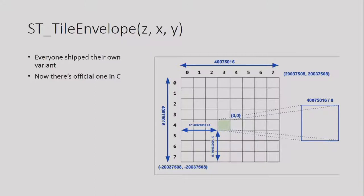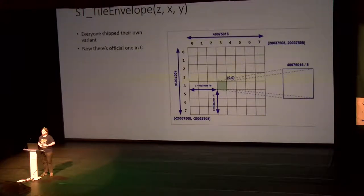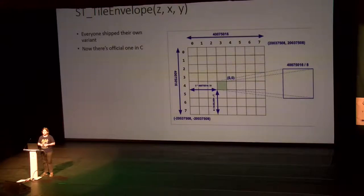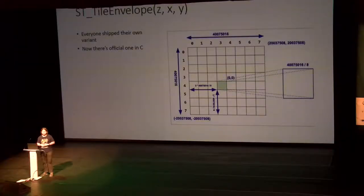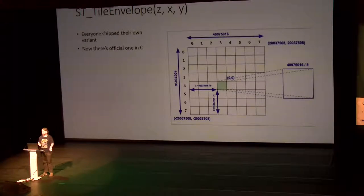Another utility function that was absent is the tile envelope. The OGC specification for tiles has the Y axis in a different direction than everyone else. This function is compatible with Mapbox and all the ways tiles are actually used. Everyone was trying to do their own implementation — I've seen one in Python, one in SQL, one in PL/pgSQL. Now we have one in C in the core PostGIS. Whenever you need to export a tile, you give the tile ID into that function, feed the output to ST_AsMVT, and you're good to go.